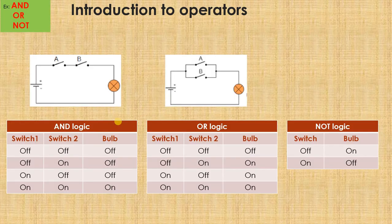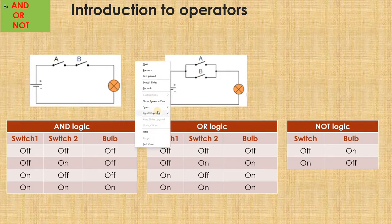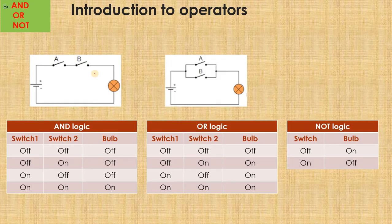Say example, let's take the first case. In the first case, let's assume, to understand AND logic, let's assume that there are two switches which are placed one after the other, like this. Say, you have two switches, this is switch number A, this is switch B and you have a bulb here.